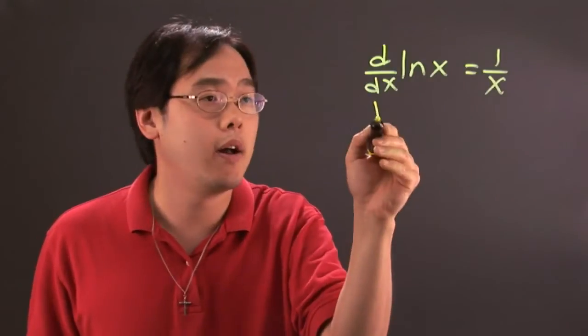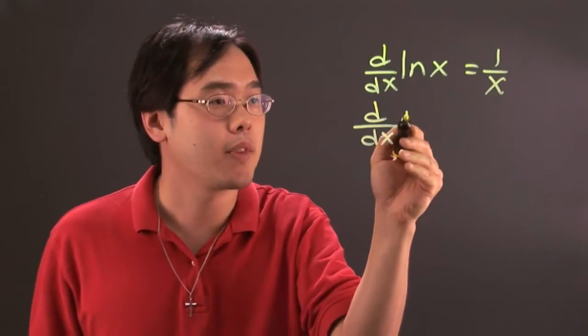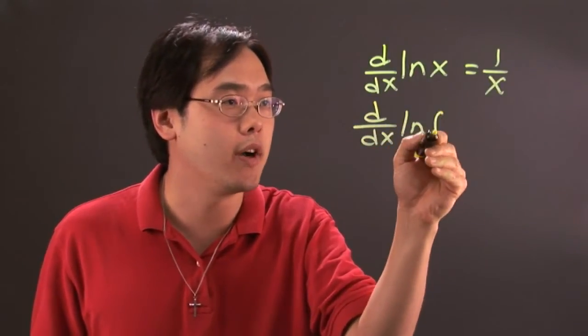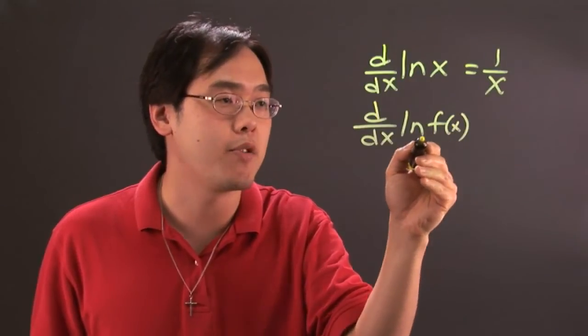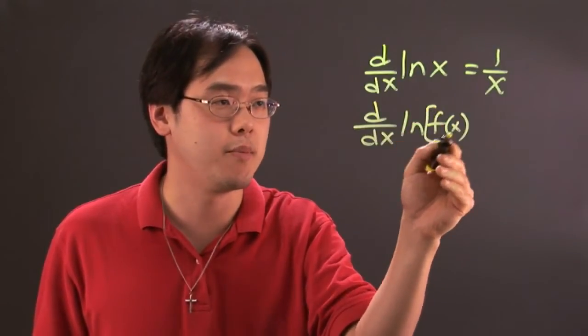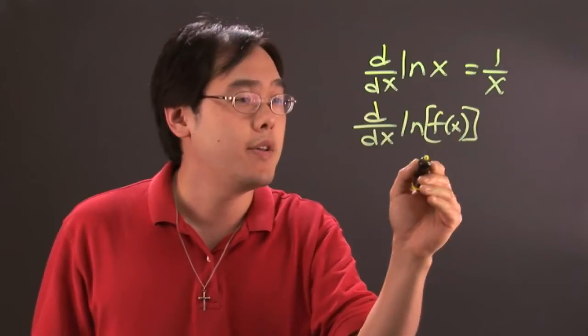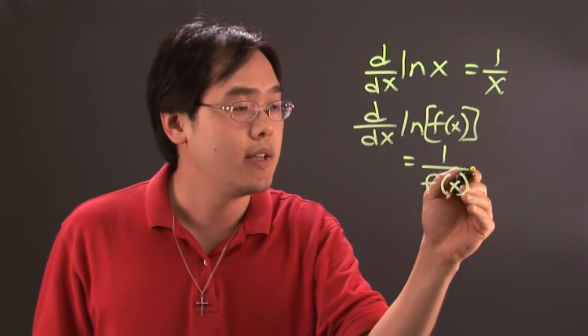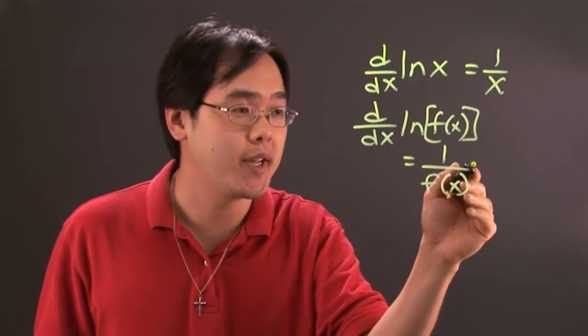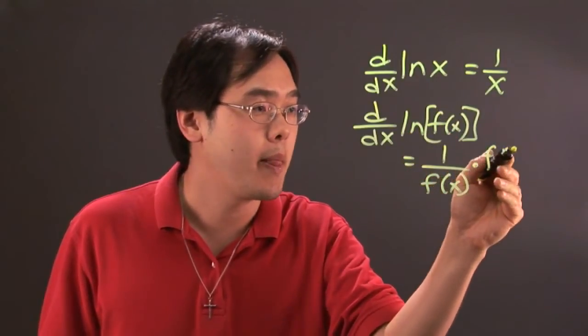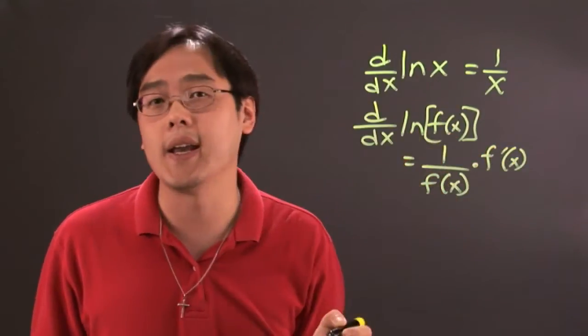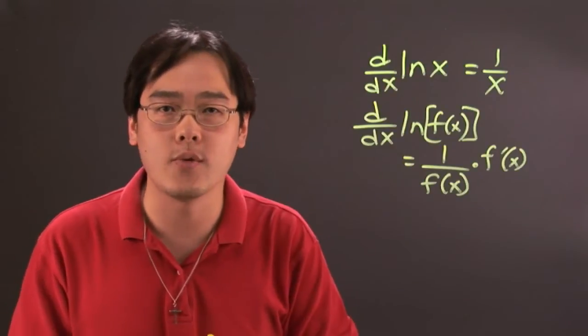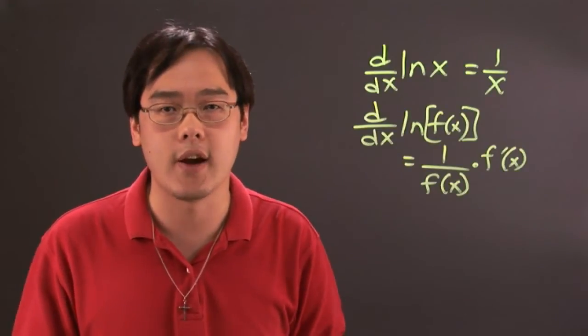Now, an offshoot of this is if you have the derivative of natural log of something other than x, like a particular function, for example, the derivative of that is 1 over f of x. So it's 1 over the inside expression times the derivative of what's inside. This is kind of an extension of the chain rule that you'll have learned as the calculus course goes on.